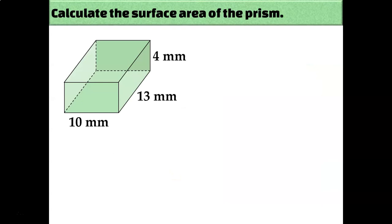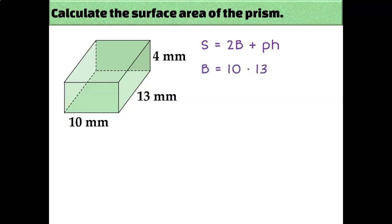Let me show you what I mean with this example. This is a rectangular prism, and since it's a prism, I'm going to use the surface area of a prism formula: S = 2B + PH. Remember that B is the area of the base. For rectangular prisms, you actually get to pick which side is the base since they're all rectangles — there's no right or wrong answer. I'm going to choose the 10 by 13 rectangle it's sitting on as my base, so the area of that base is 10 times 13, which is 130 square millimeters.